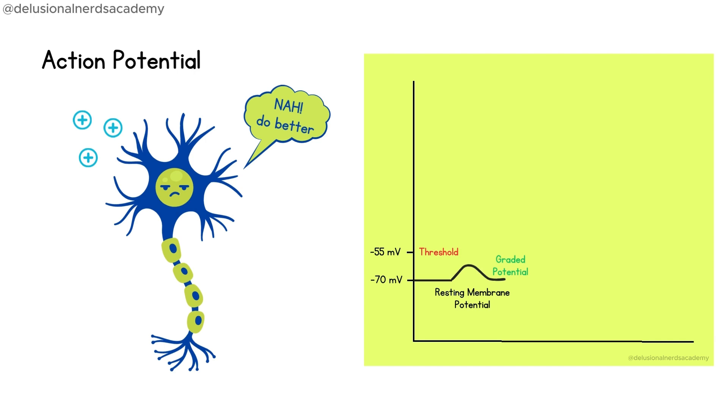But what happens if the level is reached? Then the neuron fires and an action potential is set to occur. At this point, the sodium channels in the neuron's membrane open, and positively charged sodium ions rush in.